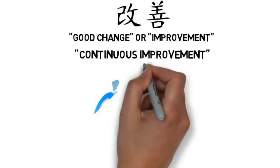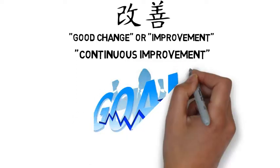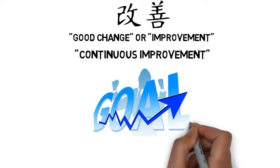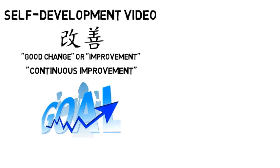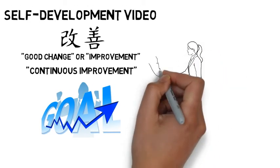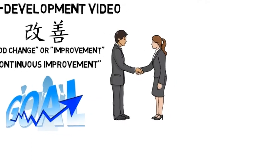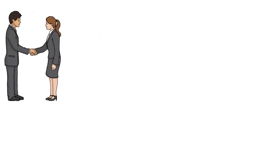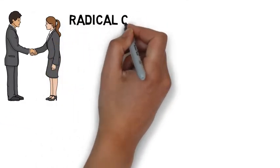Kaizen is an approach to creating continuous improvement based on the idea that small, ongoing positive changes can reap major improvements. Typically, it is based on cooperation and commitment and stands in contrast to approaches that use radical changes or top-down edicts to achieve transformation.